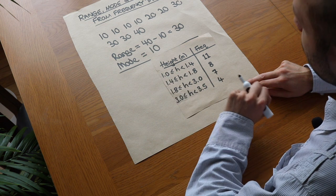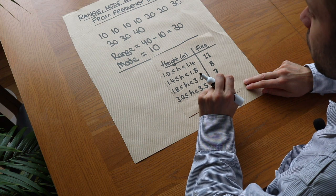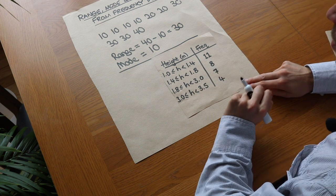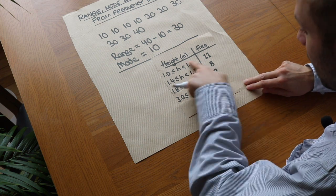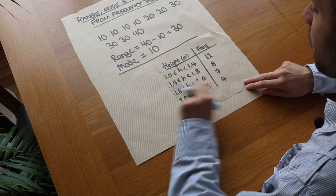And we can't work out the mode as well because we don't actually know the exact heights, but we can still work out something called the modal class interval. And what the modal class interval is basically the interval which had the highest frequency, i.e. occurred most frequently.